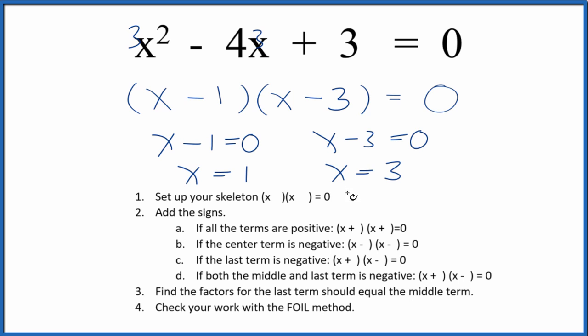You could also use the quadratic equation, and you'd end up with these same answers. This is Dr. B, factoring the equation x squared minus 4x plus 3 equals 0. Thanks for watchin'.